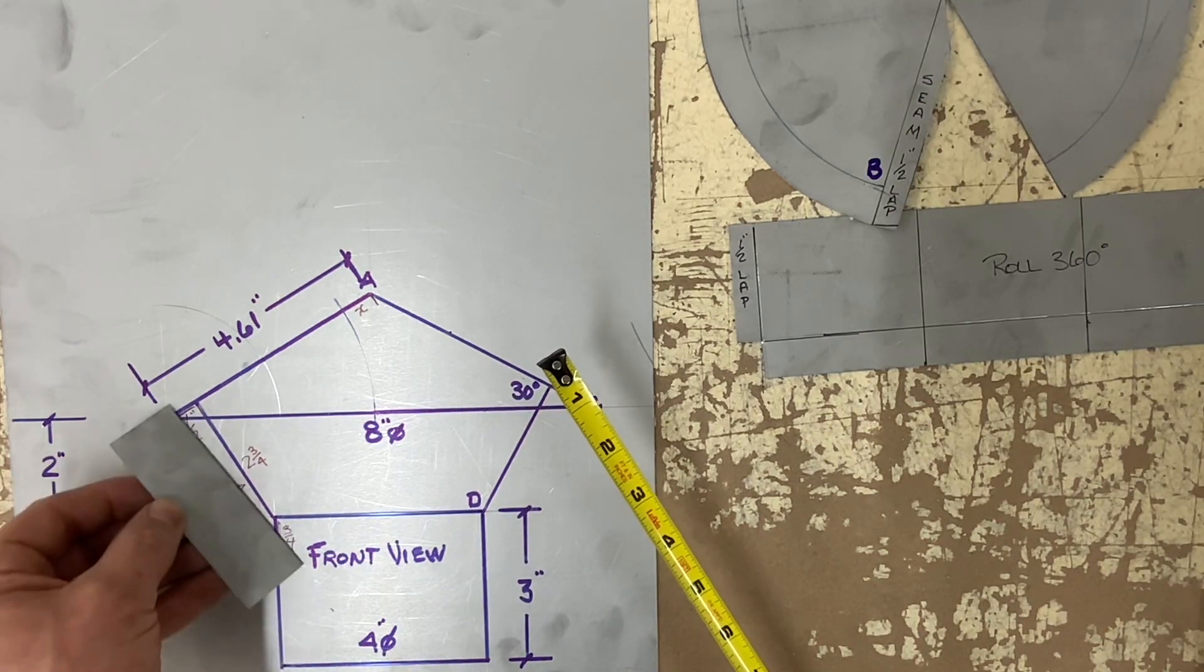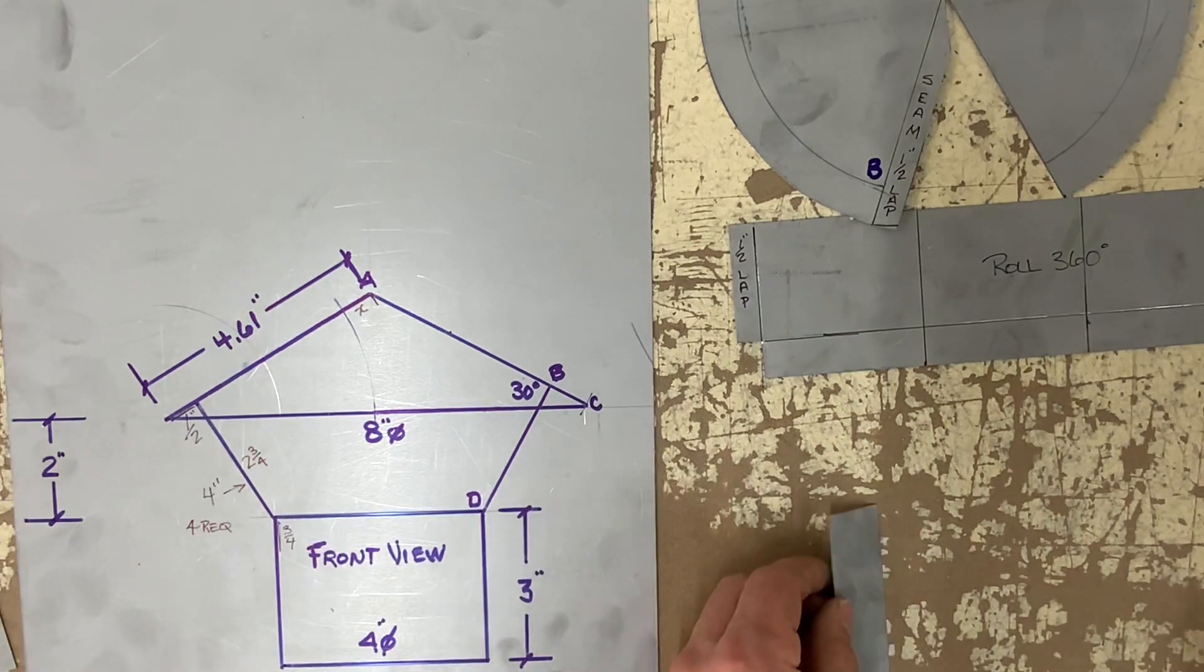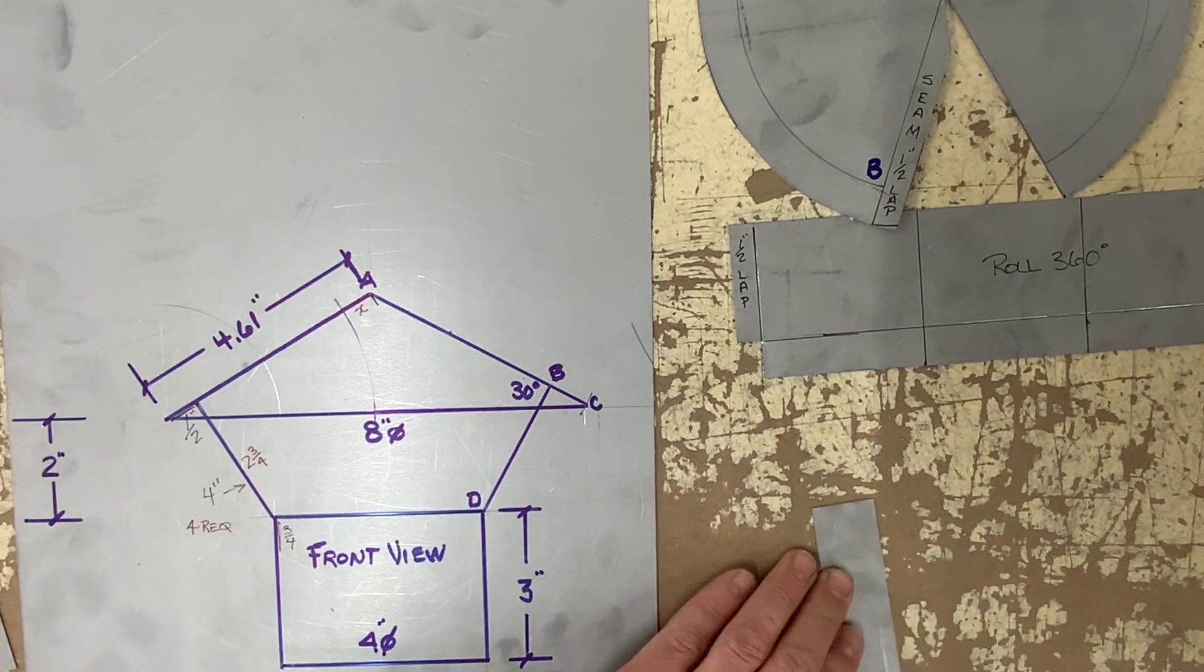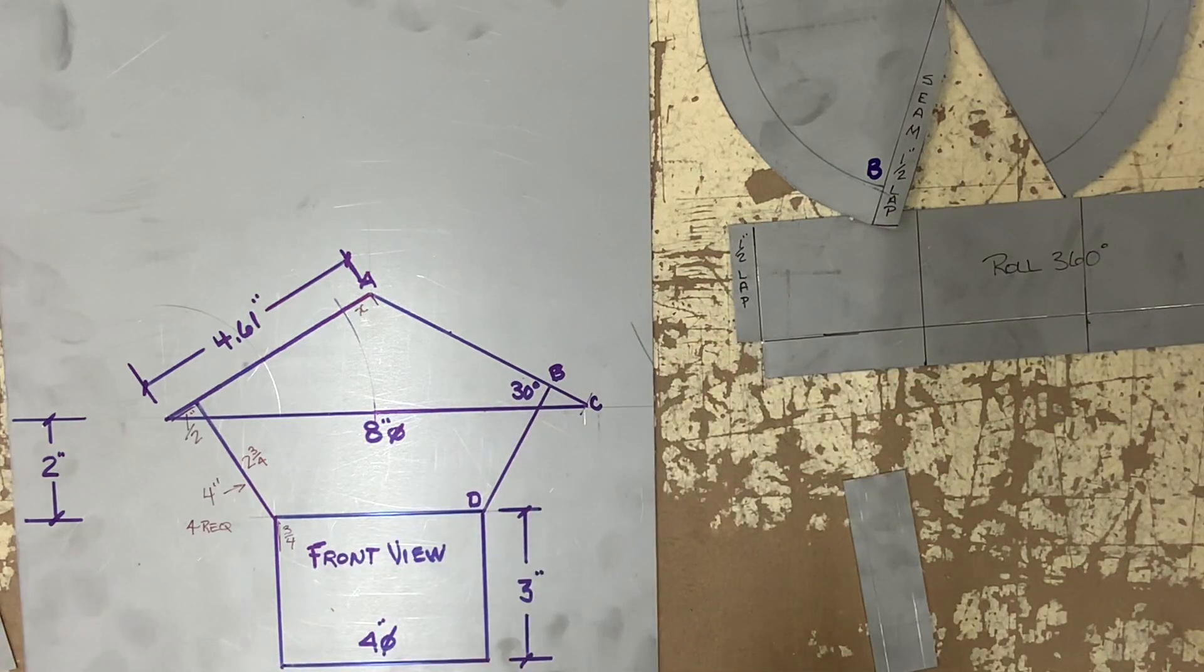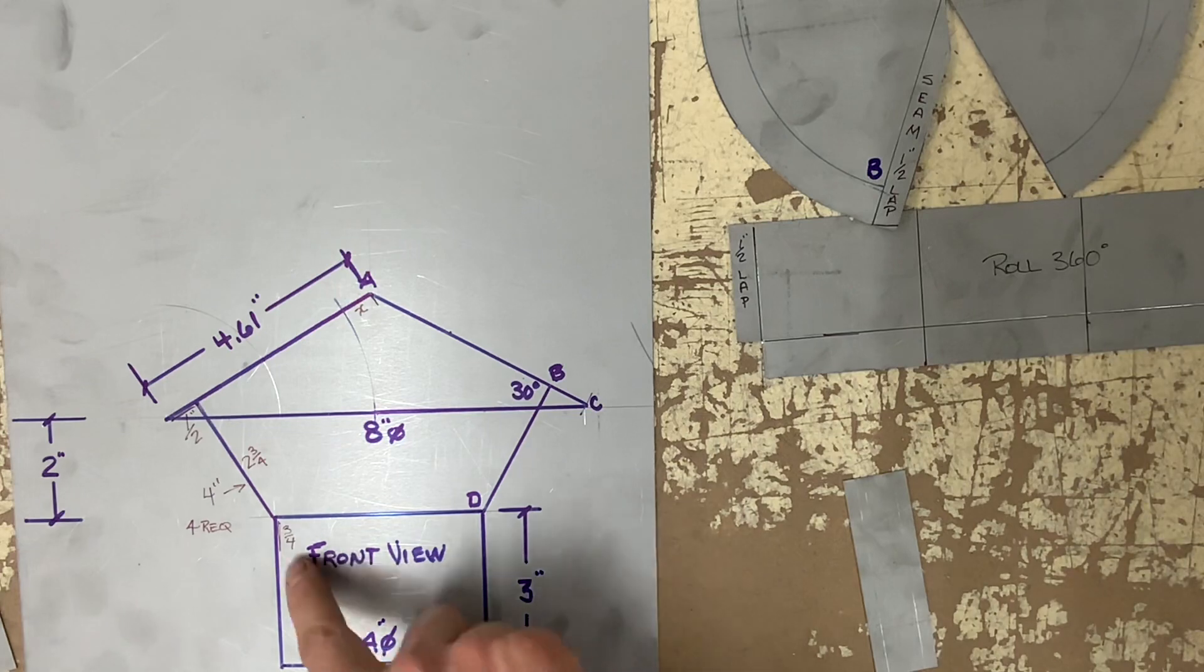Now these brackets, as you can see, I'm allowing a half inch to be spot welded to the cap. The slant is two and three quarters, and I'm also allowing three quarters of an inch to be spot welded to the stack.